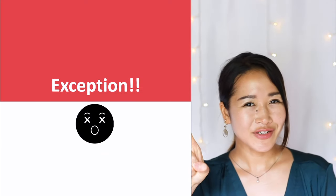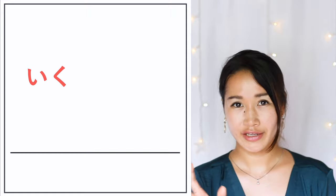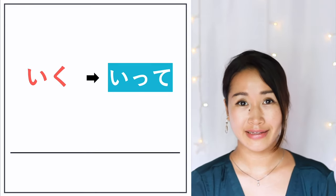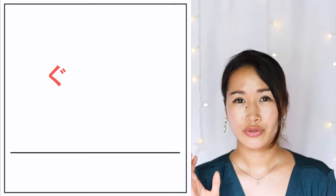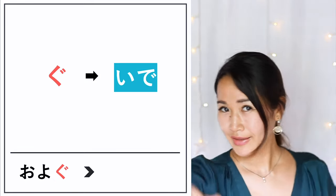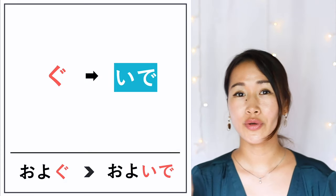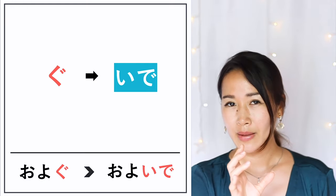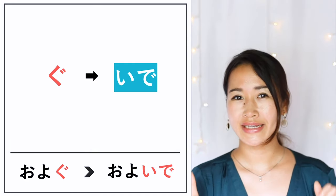But there's just one exception. The verb 'to go' is 行く, and it ends with KU. If we follow the rule, it should be いて, but it's actually 行って — just one exception. Next, verbs ending with GU change into いで. For example, 'to swim' — 泳ぐ — becomes 泳いで. You can remember: KU doesn't have tenten so it's いて, but GU has tenten, so that tenten transfers — making it いで.